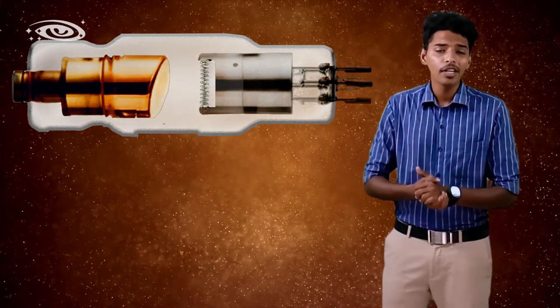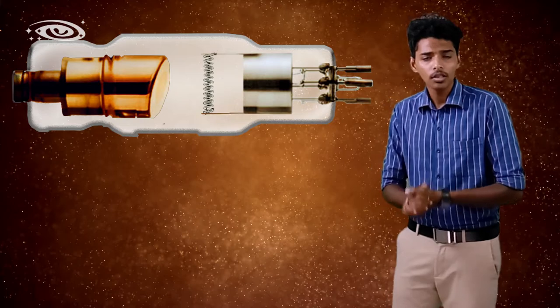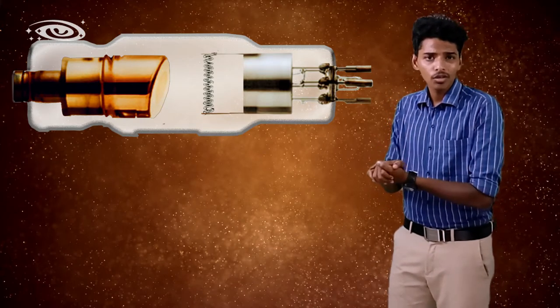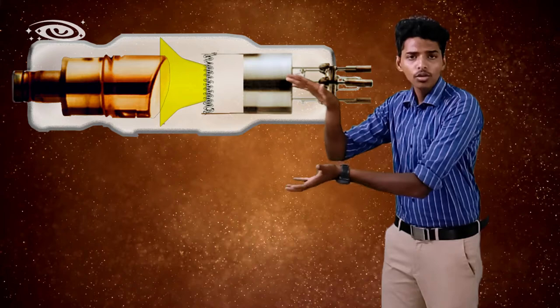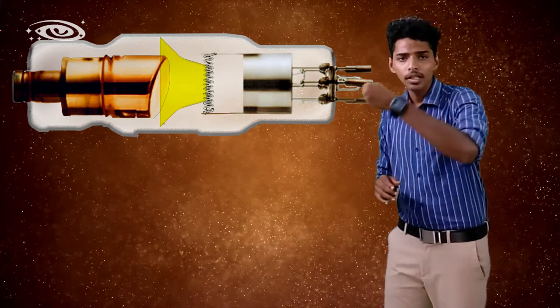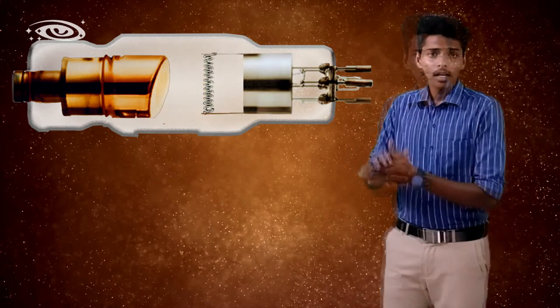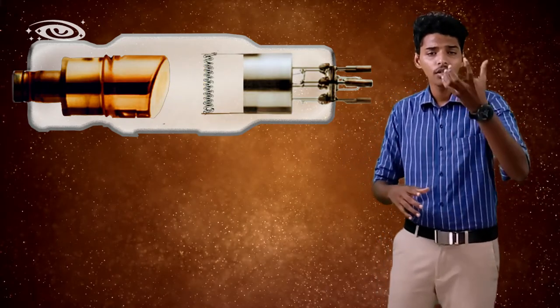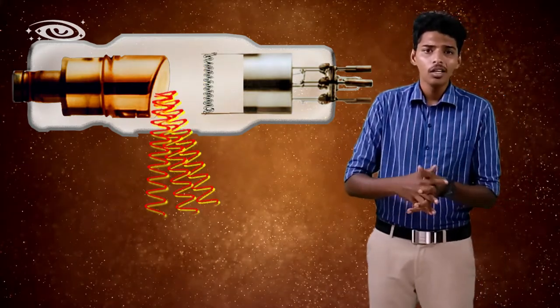For example, if there is no focusing cup, all the filament electrons will be diverged in all directions. Due to this divergency, not all electrons will interact with the anode, and the intensity of the x-rays will be reduced. Those x-rays are not used for the radiograph.